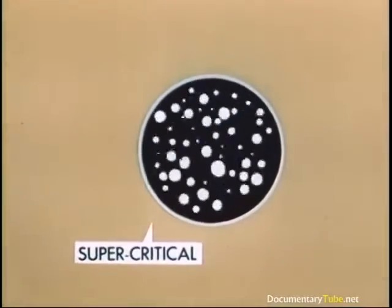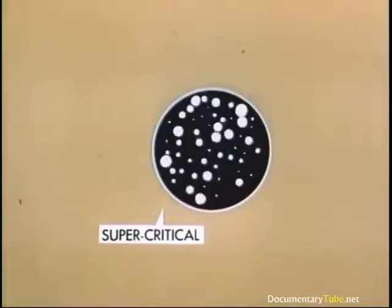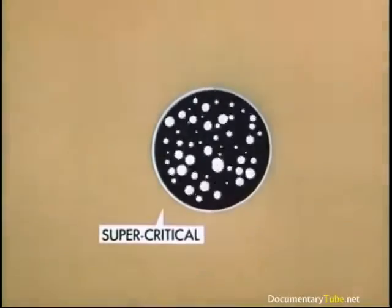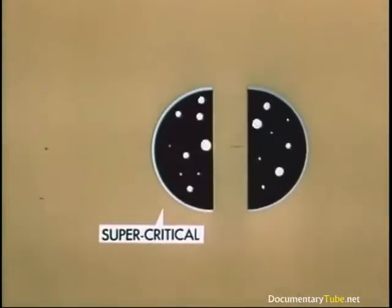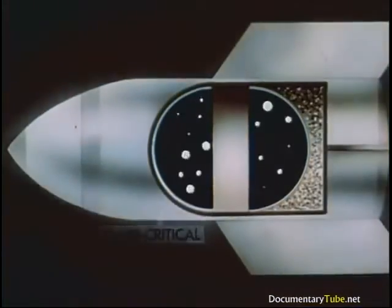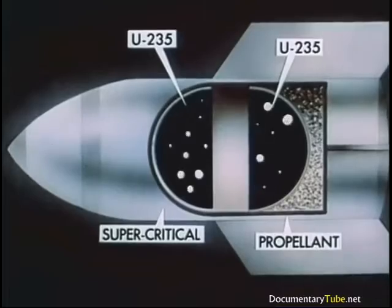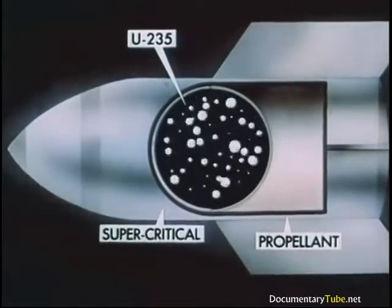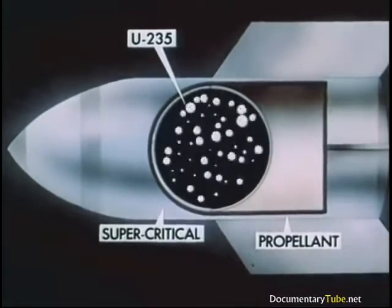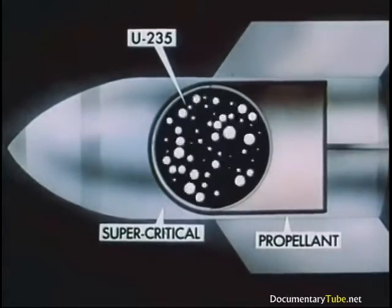And our situation is also supercritical, because we aren't ready for an explosion. We must keep our supercritical mass divided into subcritical parts until the proper time. When the explosion is desired, the parts are brought together quickly and kept together long enough for a great number of fissions to occur. The time for our bomb to explode is less than a millionth of a second.